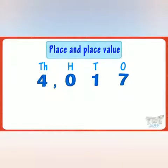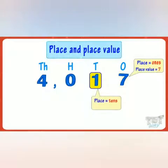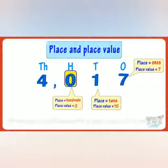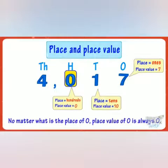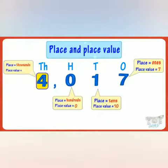The place of seven is ones, and its place value is seven. The place of one is tens, and its place value is one ten, that is ten. The place of zero is hundreds, and its place value is zero hundreds, or zero — no matter what the place of zero is, the place value of zero is always zero. The place of four is thousands, and its place value is four thousand.